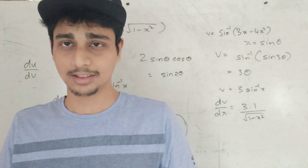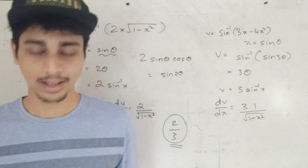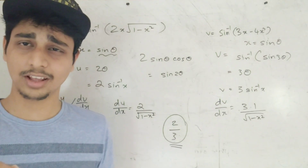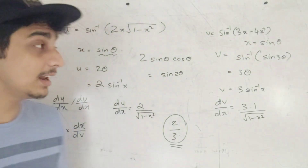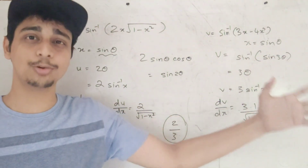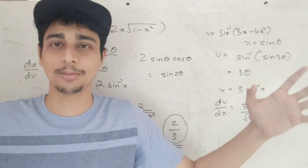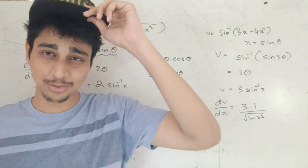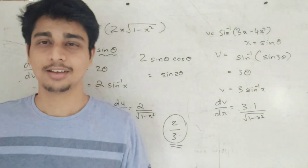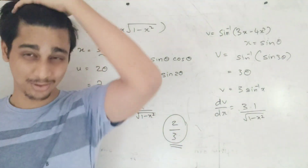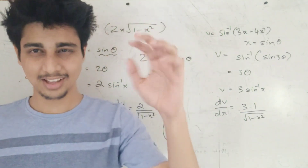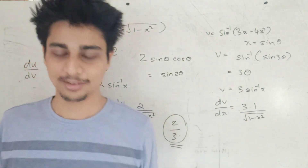So du by dv equals du/dx divided by dv/dx, which gives 2/3. So the answer is 2/3. Let's see you in the next video. Bye-bye.